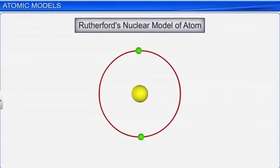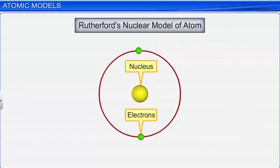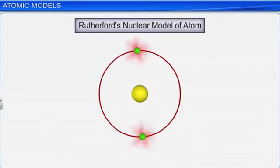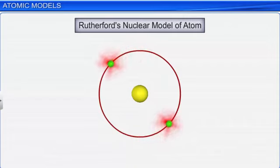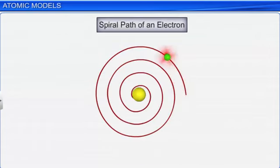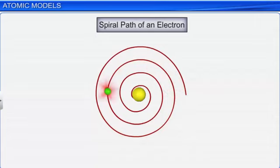Thus, Rutherford's model could account for the presence of the nucleus and electrons outside the nucleus. However, it failed to explain the stability of an atom. According to Maxwell's theory of electromagnetic radiation, a charged particle in circular motion emits energy continuously. Hence, an electron revolving around the nucleus also loses energy. As a consequence, the electron follows a spiral path towards the nucleus, and this ultimately results in the collapse of an atom.